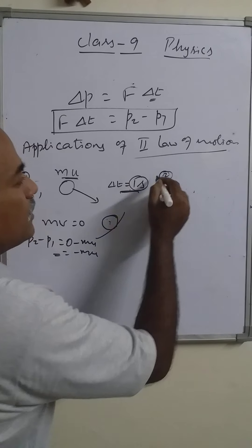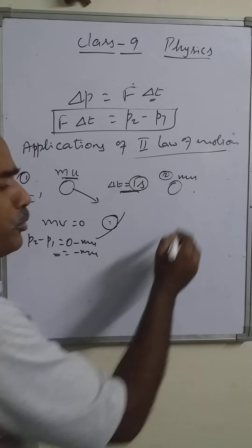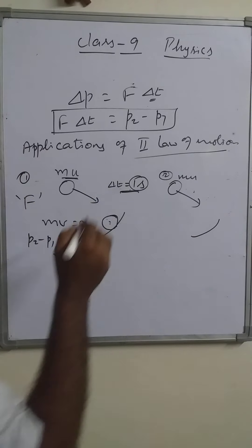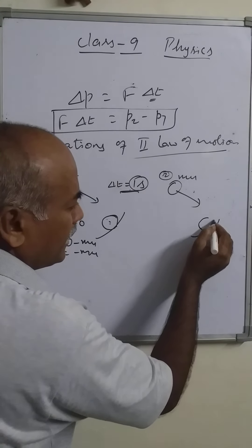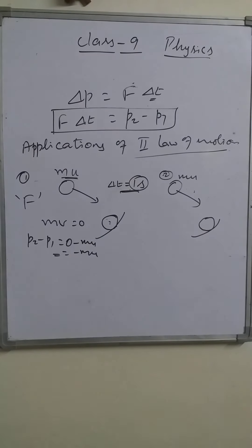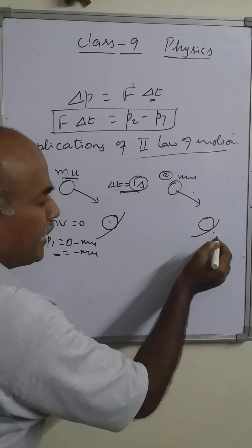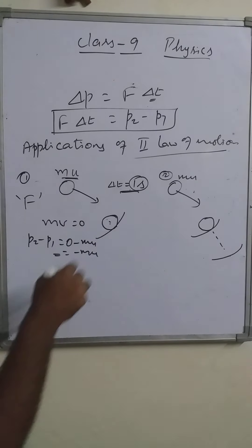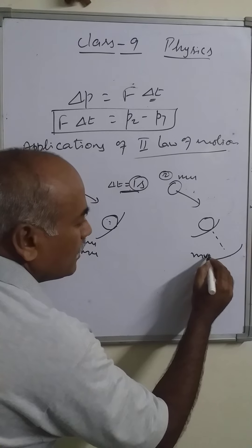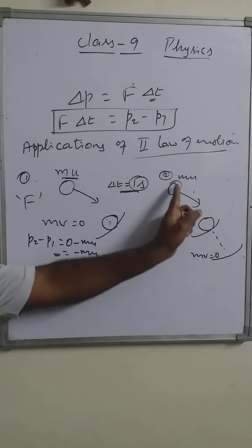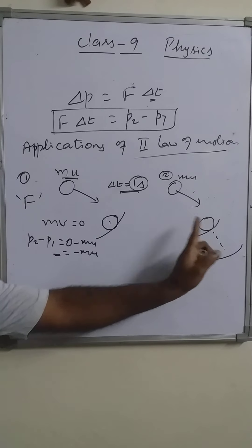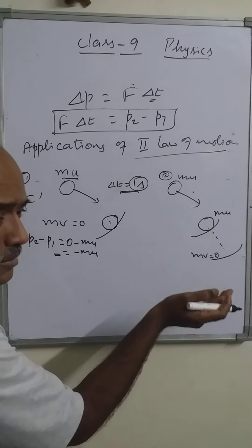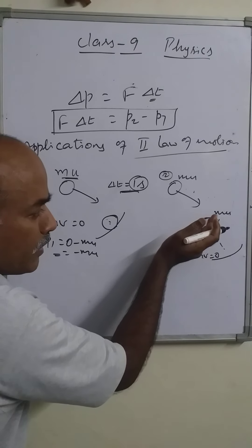On the other hand, the same ball is moving with momentum mu and reaches the player's hand. Now the player, instead of stopping it at once, lowers the hand in the downward direction while taking the ball. Finally the ball is stopped, so at that lower position the momentum becomes zero.